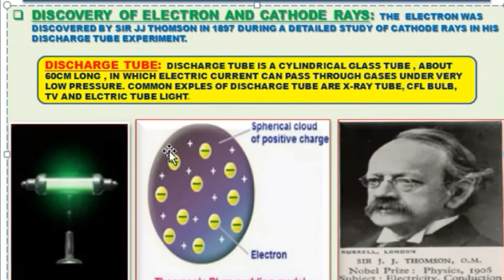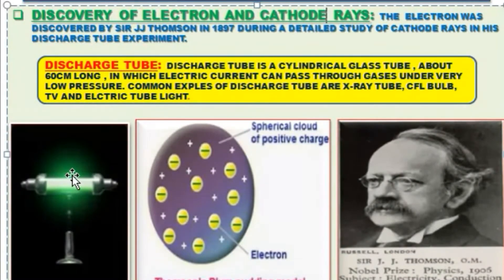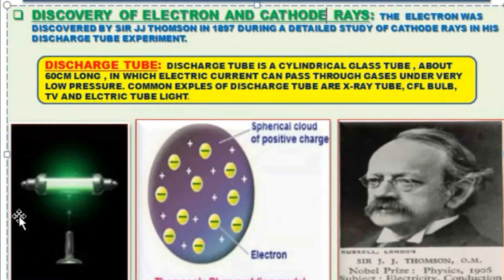Before JJ Thompson started his experiment, William Crookes, a British scientist, discovered in 1879 that gases are ordinarily poor conductors of electricity, even when an electric potential of about 10,000 volts was applied. However, gases start conducting electricity when the pressure inside the discharge tube is reduced gradually — slowly, not suddenly.